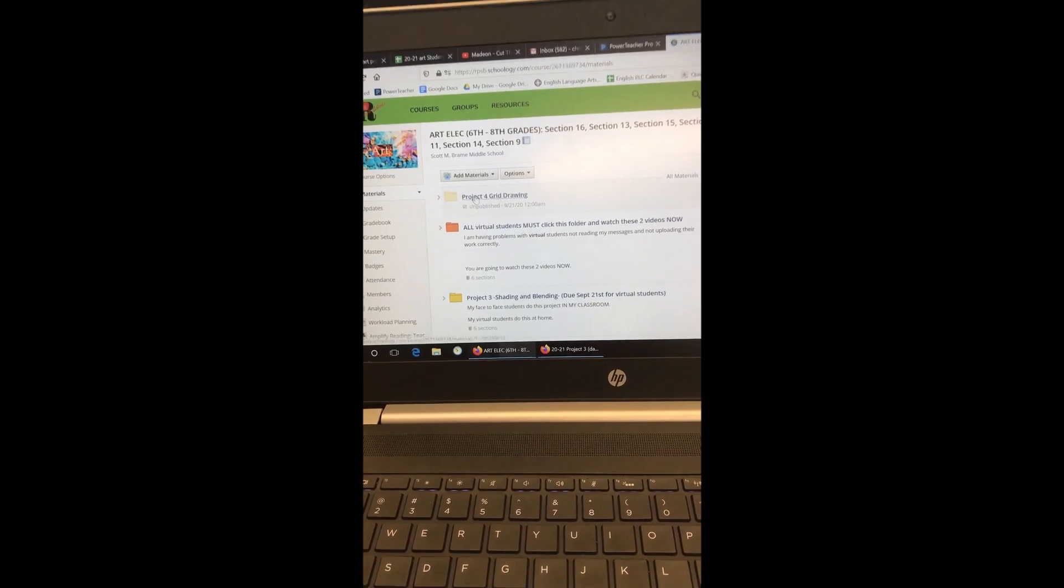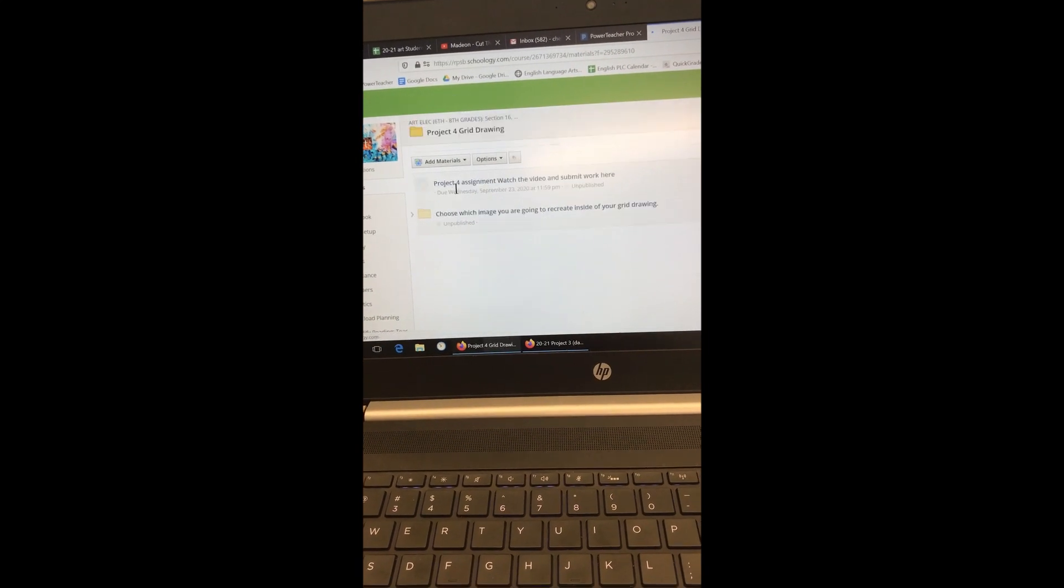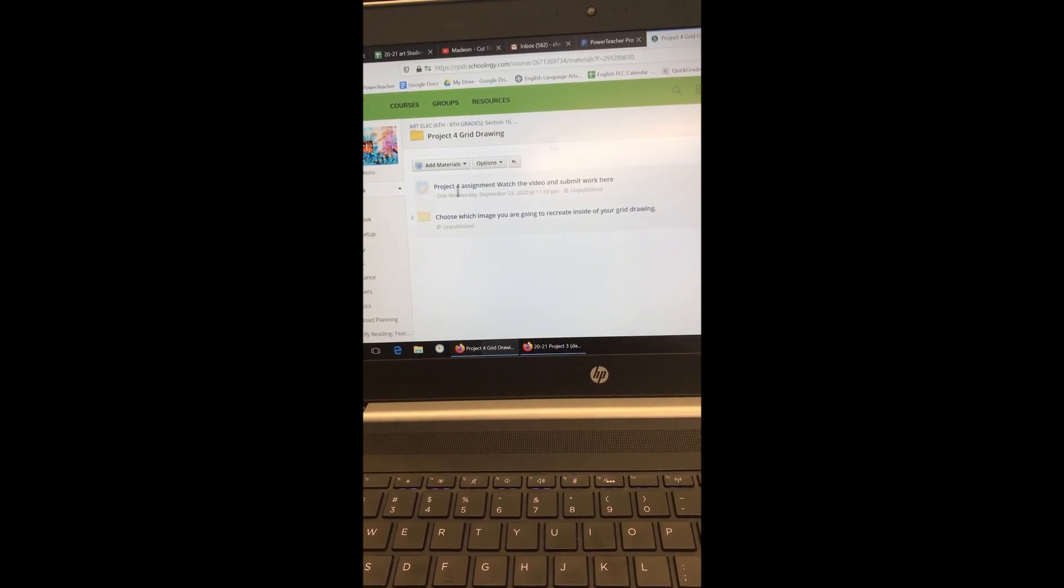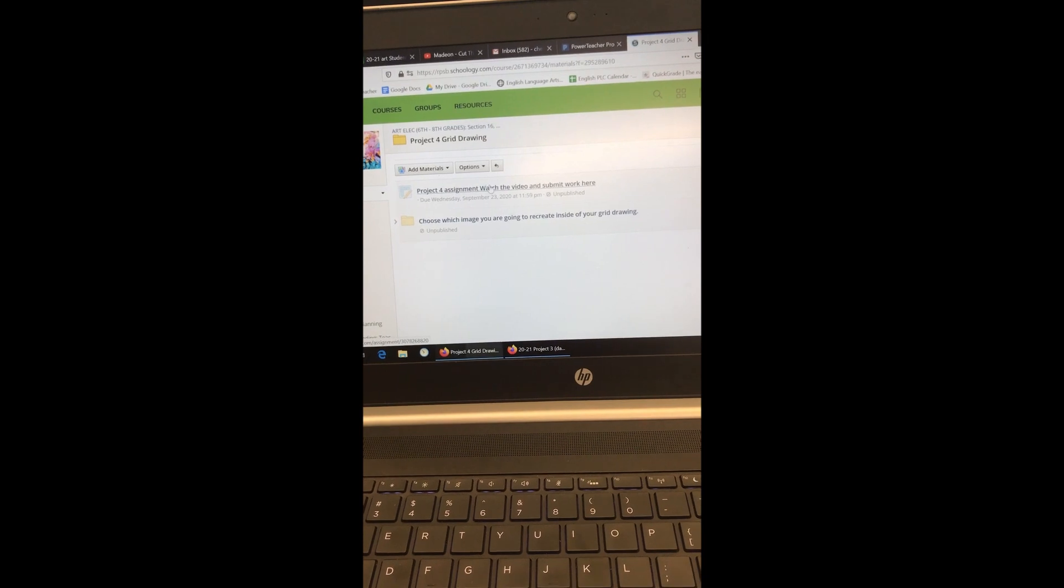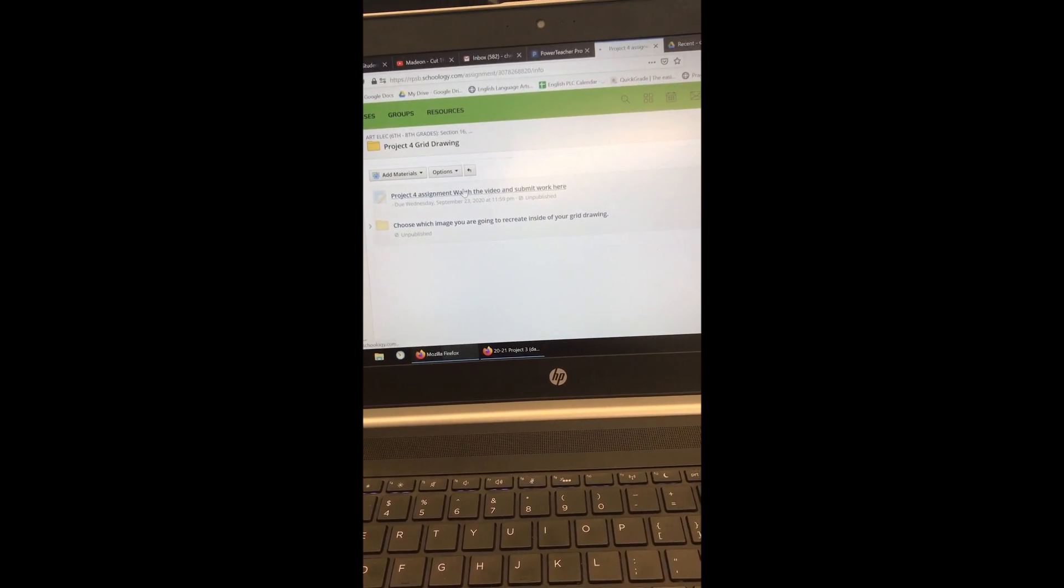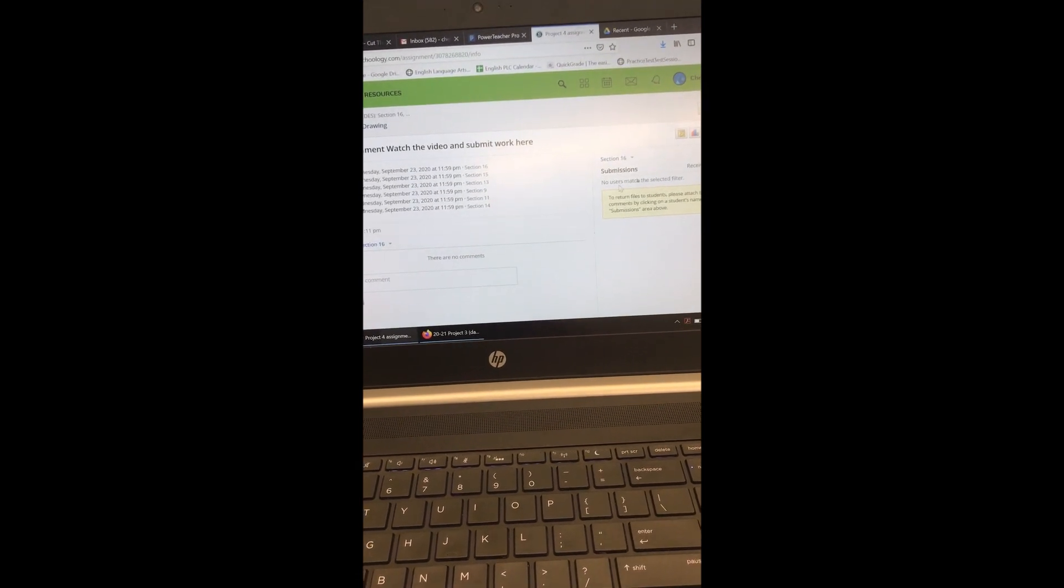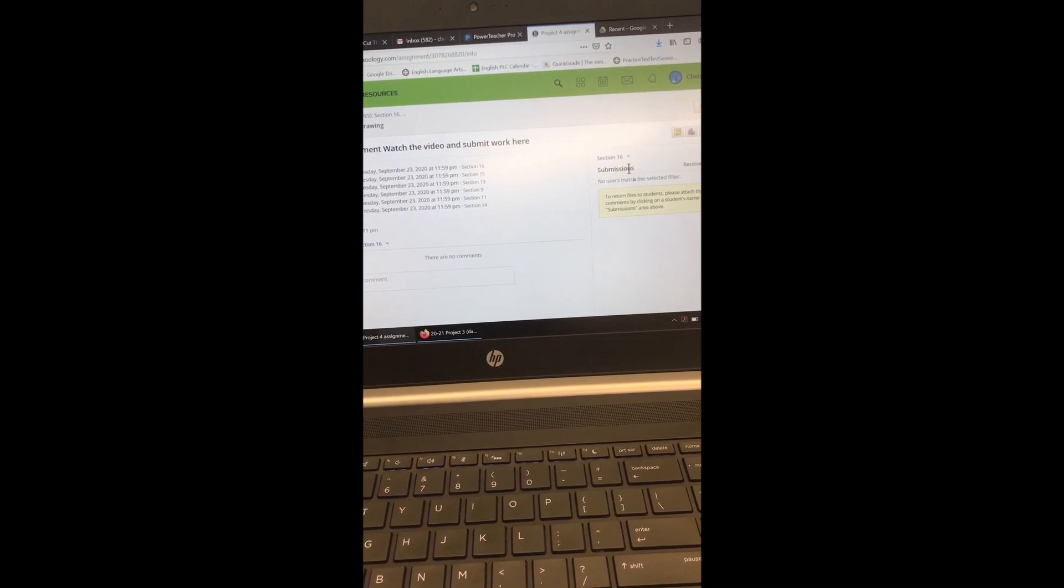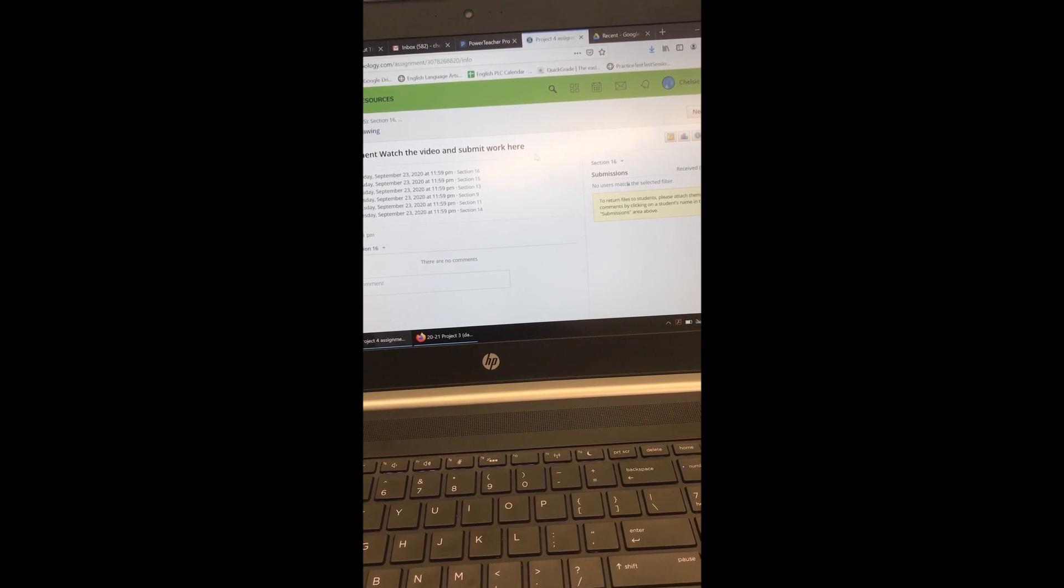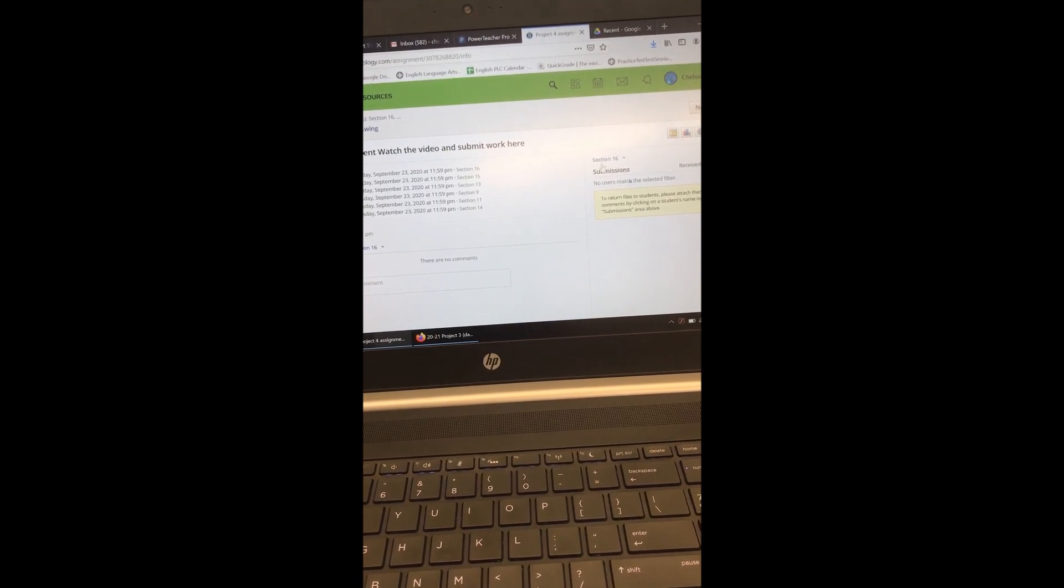When you finish your grid drawing, you're going to go back to project for grid drawing. Click on project for assignment, watch video, and submit work. And there's going to be an area up here on your screen where it says submit work. Then you're going to find the picture and insert it, and that's how I'm going to be able to grade your work.